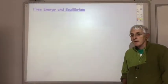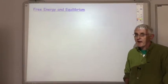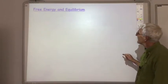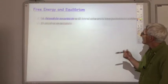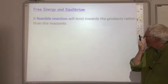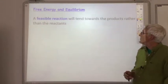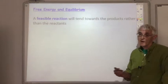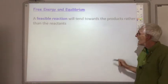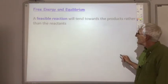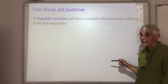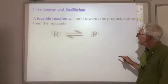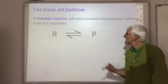In the final part of section 1.5, we're going to go back to where we started, in which I said that a feasible reaction will tend towards the products rather than the reactants. And in the case of reversible reactions, we get an equilibrium between the reactants and the products.